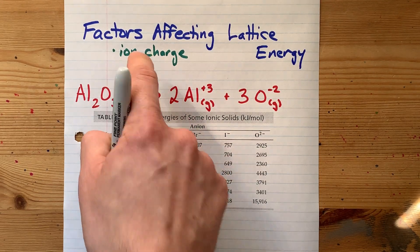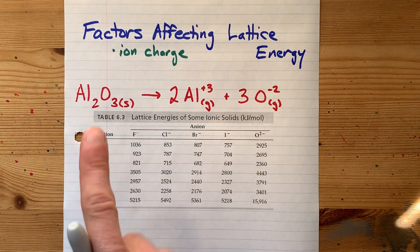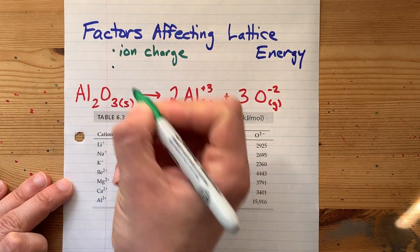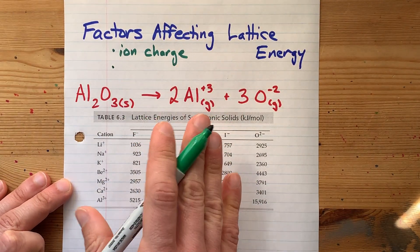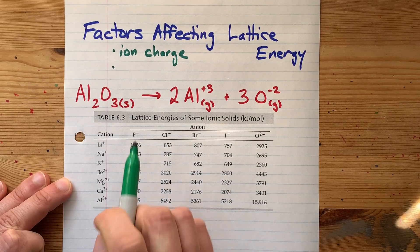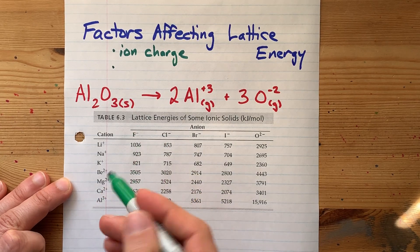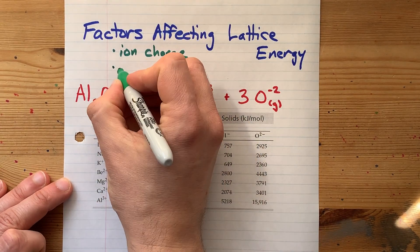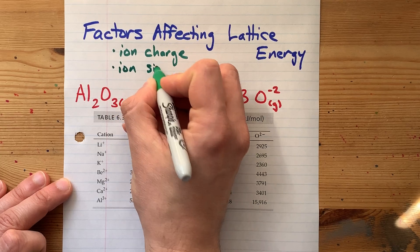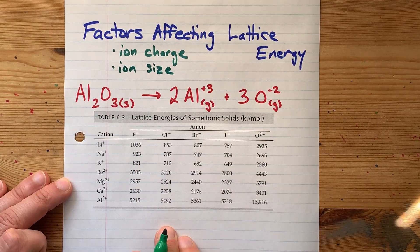Bigger charges mean bigger lattice energies always. If there's a tie — if you're intercomparing two ions that happen to have the same charge — then it comes down to ion size.